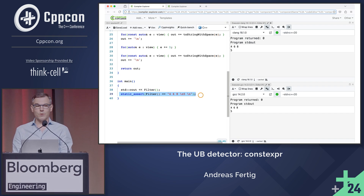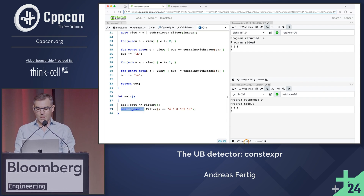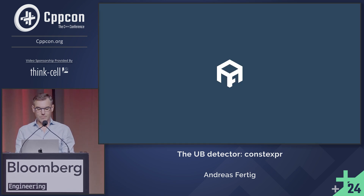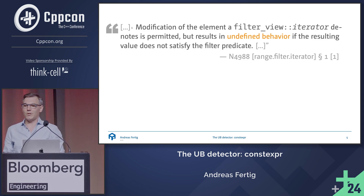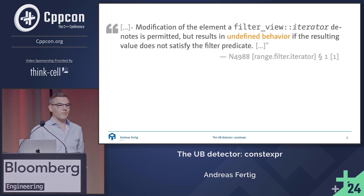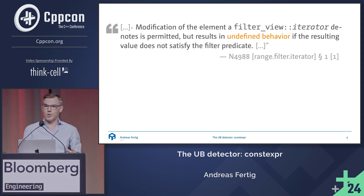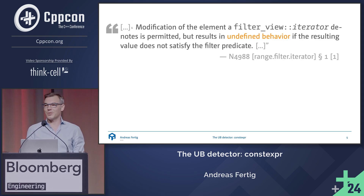This is a function; it's constexpr. I static_assert on it, so I'm doing this at compile time. If you want to look up the details, here is what the standard says: 'Modification of the element of a filter_view iterator is permitted, but results in undefined behavior if the resulting value no longer satisfies the predicate' — which I just invalidated. So: language UB. At least this one you can have in a constexpr function since C++20.